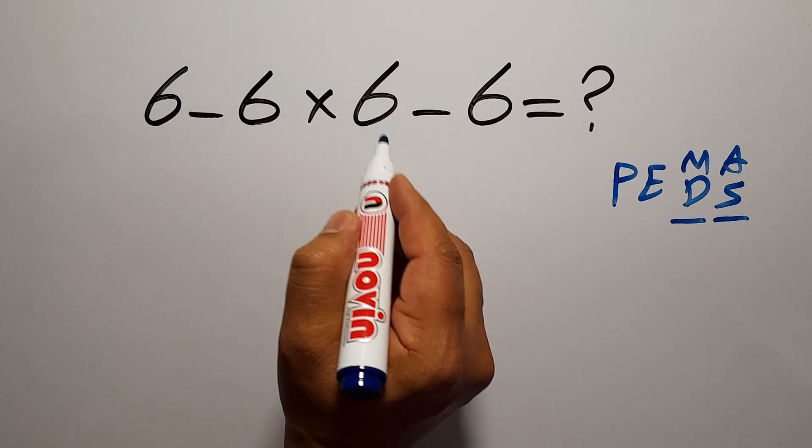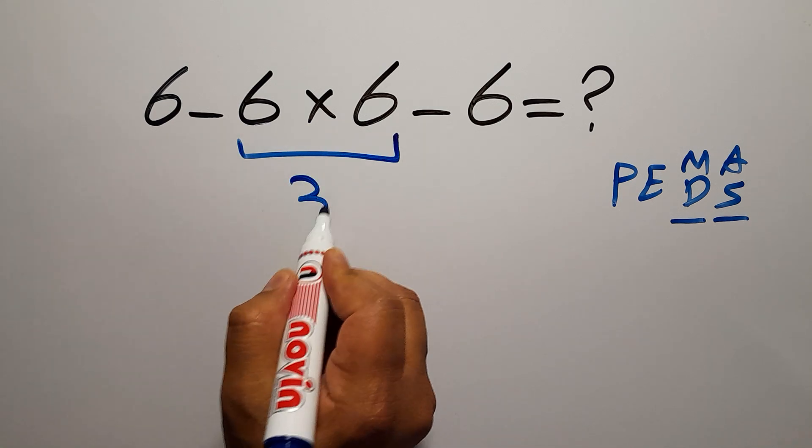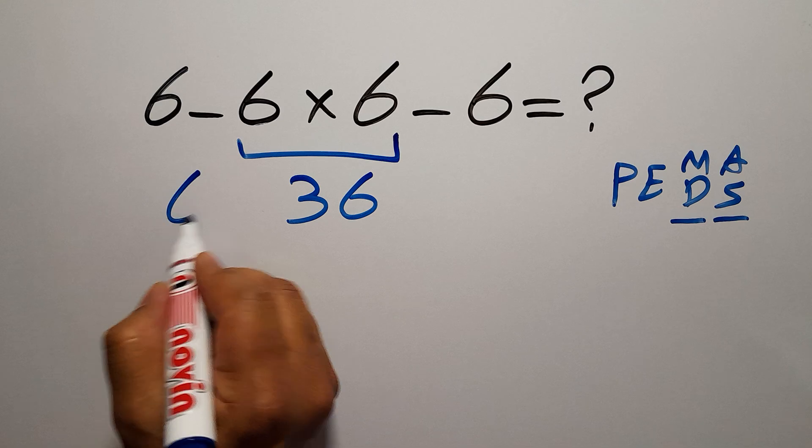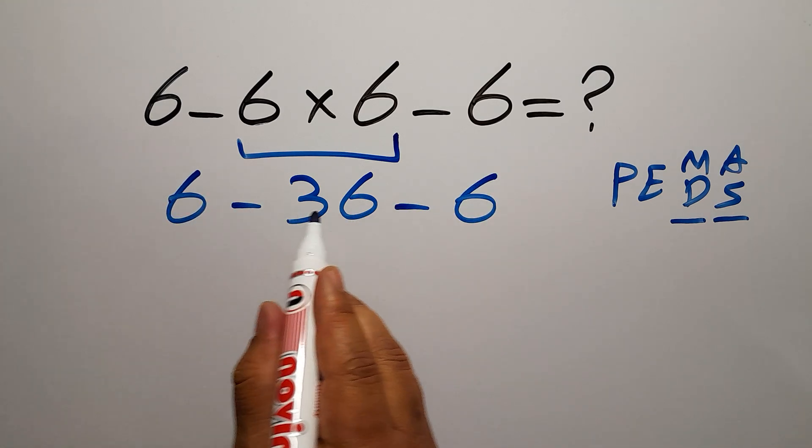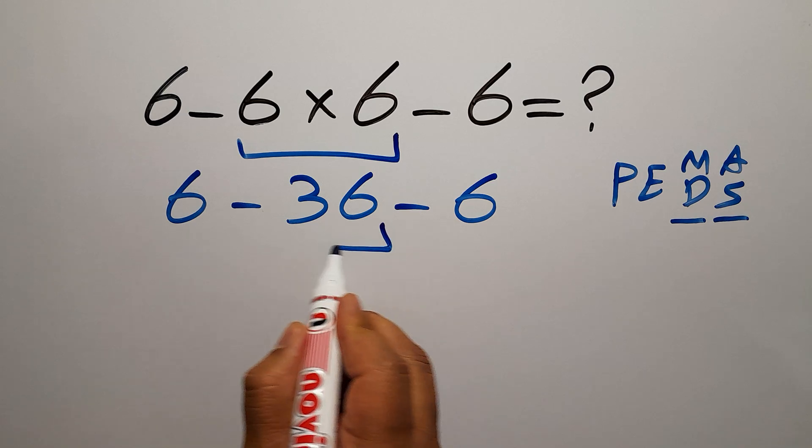6 times 6 gives us 36, so we have 6 minus 36 minus 6. Now 6 minus 36 gives us negative 30.